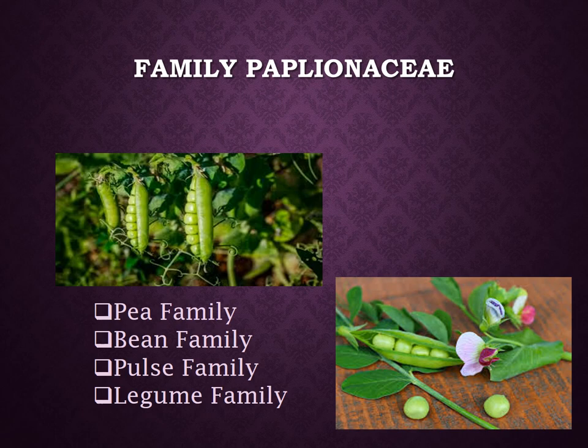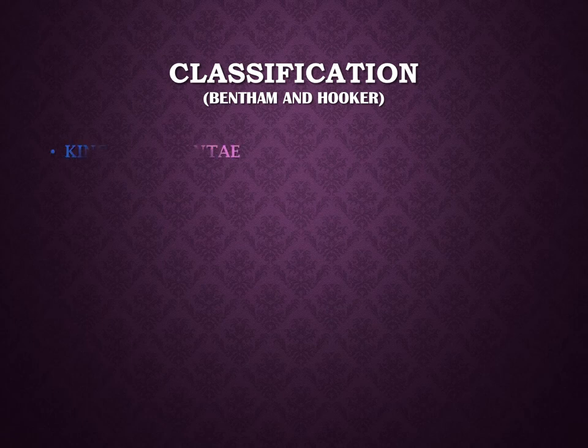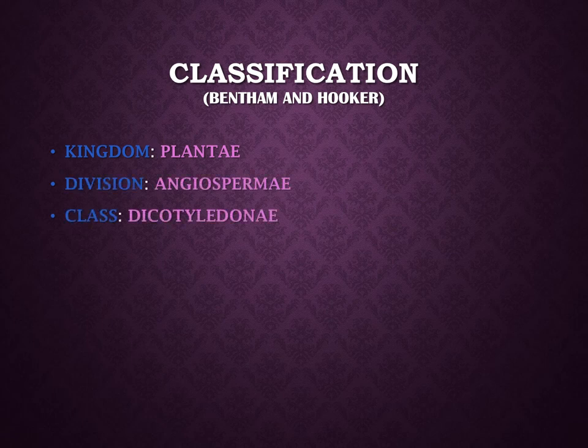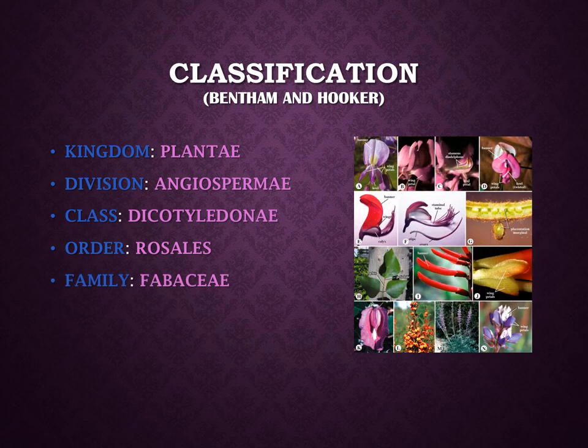The family Fabaceae or family Leguminaceae is also called the family Fabaceae. It is commonly known as the legume family, the pea family, bean family, or the pulse family. The name Fabaceae comes from the genus Faba, now included in Vicia, and Leguminaceae is an older name still considered valid, referring to the typical flowers of this plant which are called legumes. According to Bentham and Hooker's system of classification, the family Papilionaceae is placed under the kingdom Plantae, sub-kingdom Angiospermae, class Dicotyledonae, order Rosales, and the family Fabaceae or Papilionaceae.